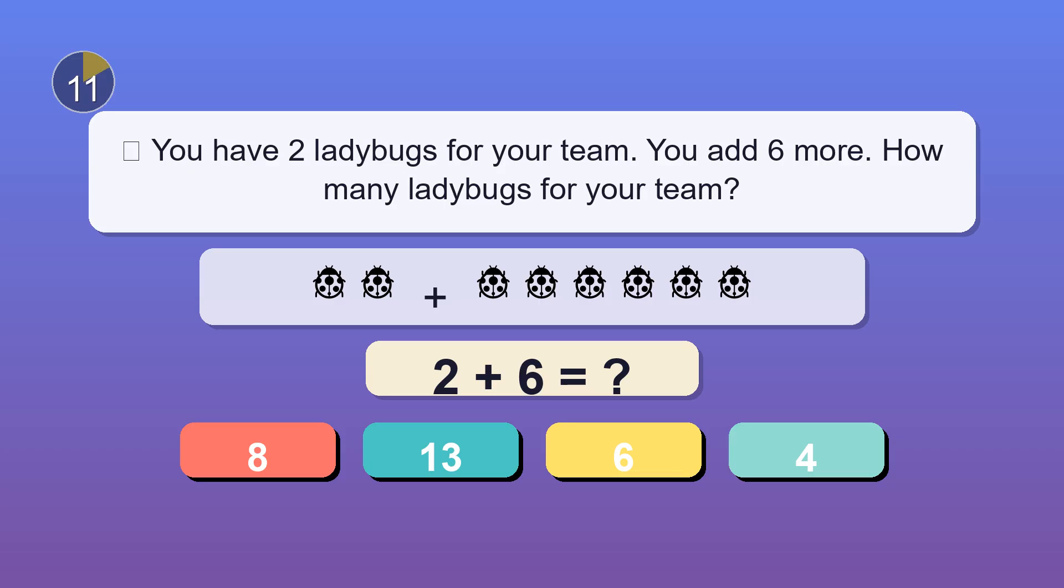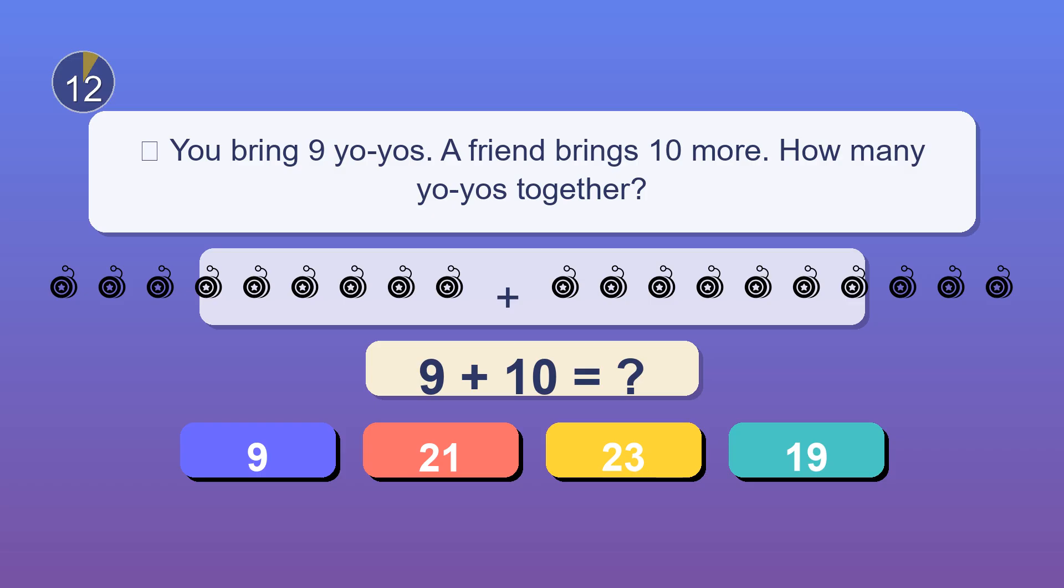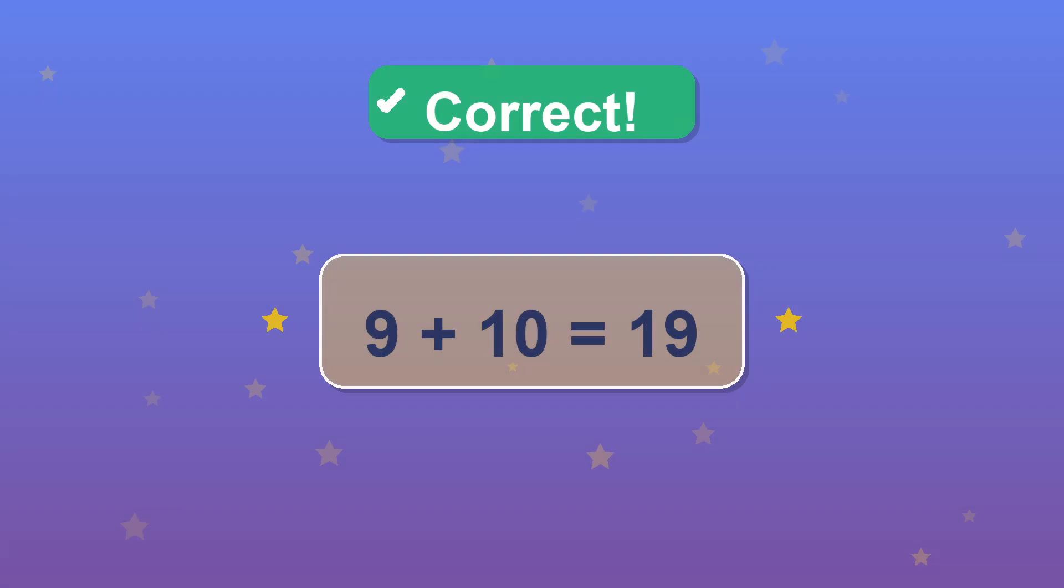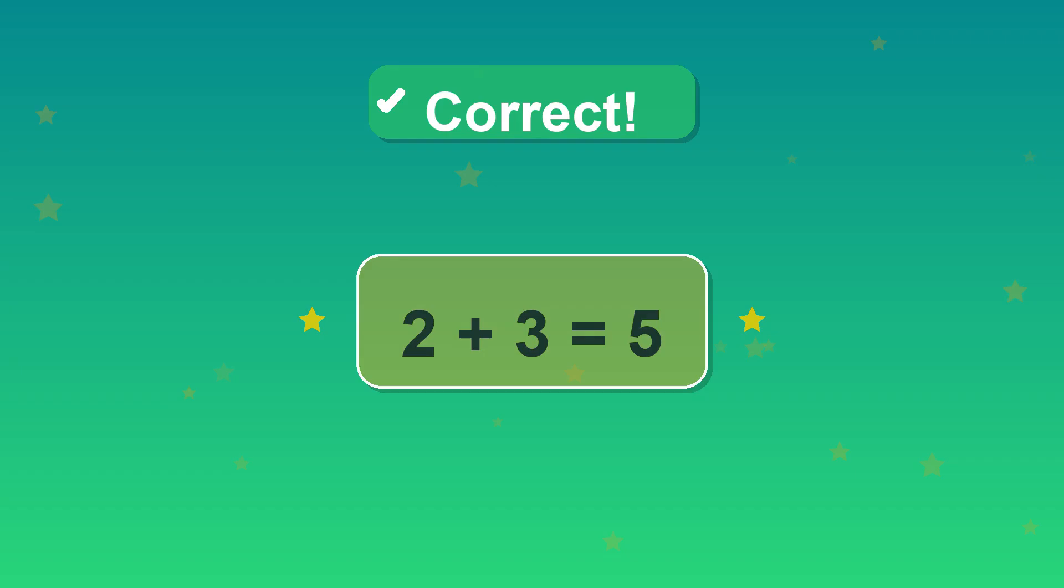You have two ladybugs for your team. You add six more. How many ladybugs for your team? Eight. Nice and quick. You bring nine yo-yos. A friend brings ten more. How many yo-yos together? That's 19. You begin a tally with two leopards and add three more. How many leopards in all? Five. Well done.